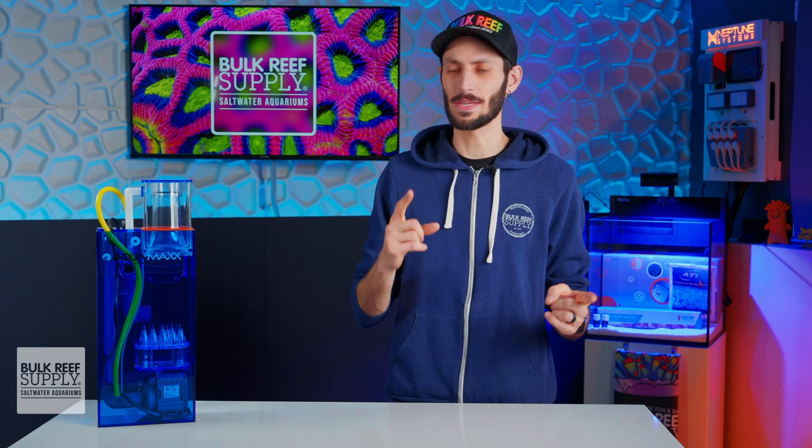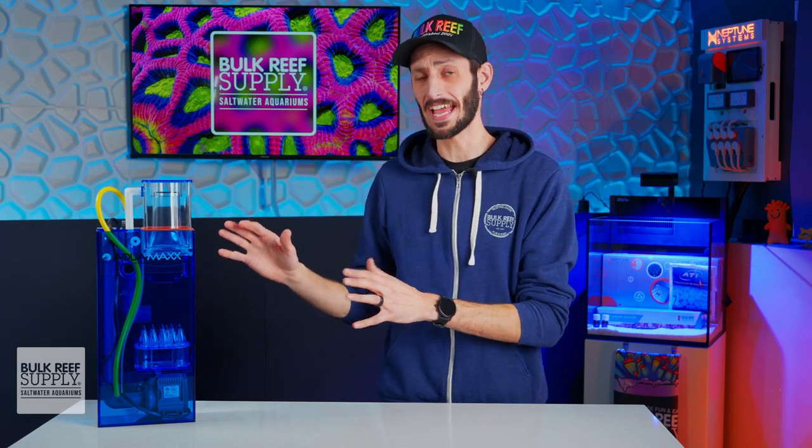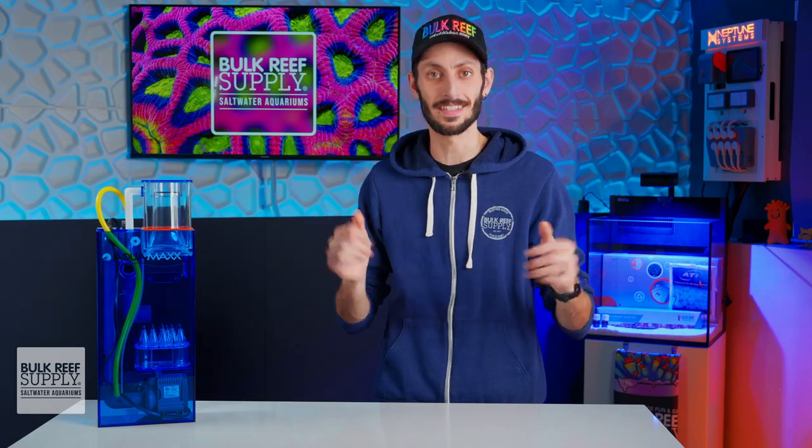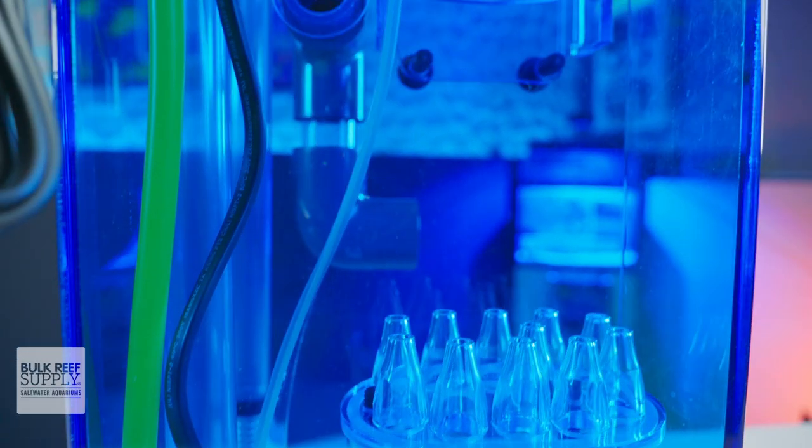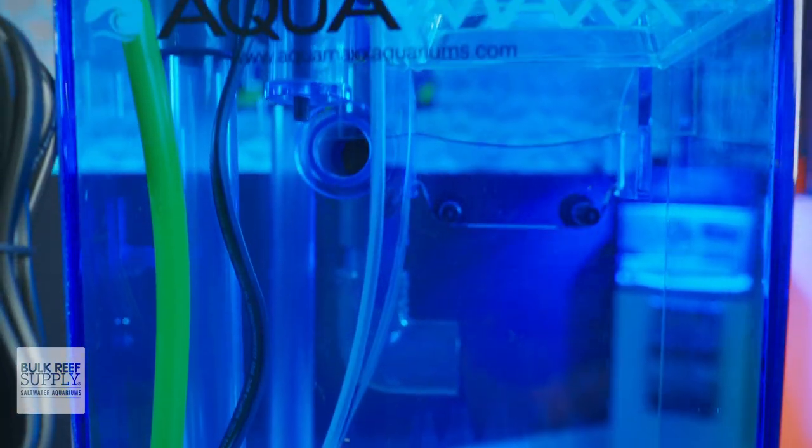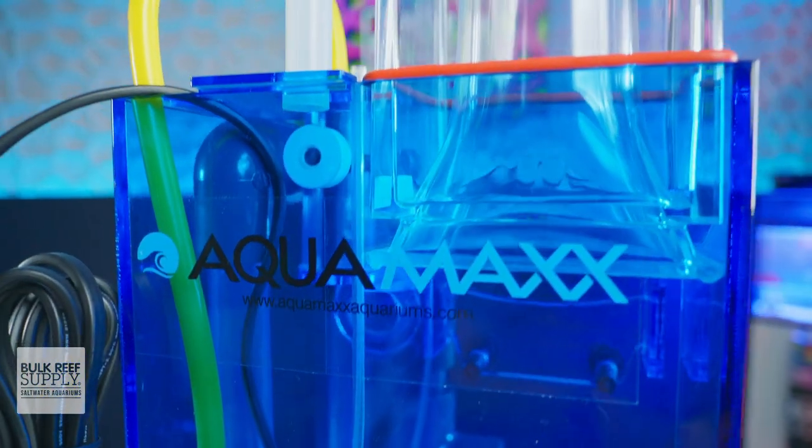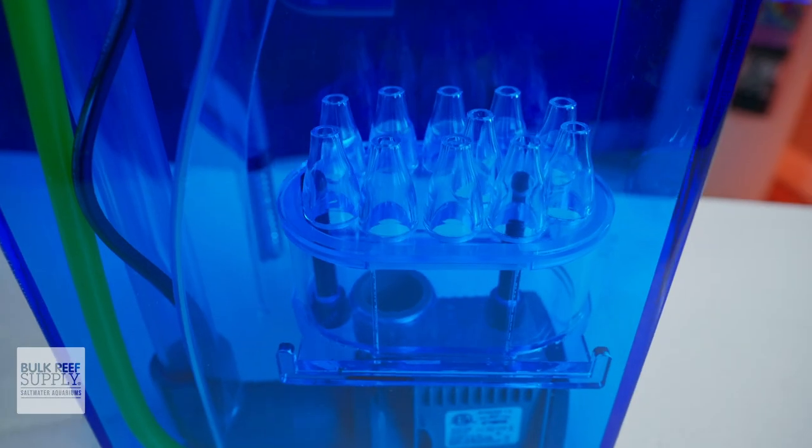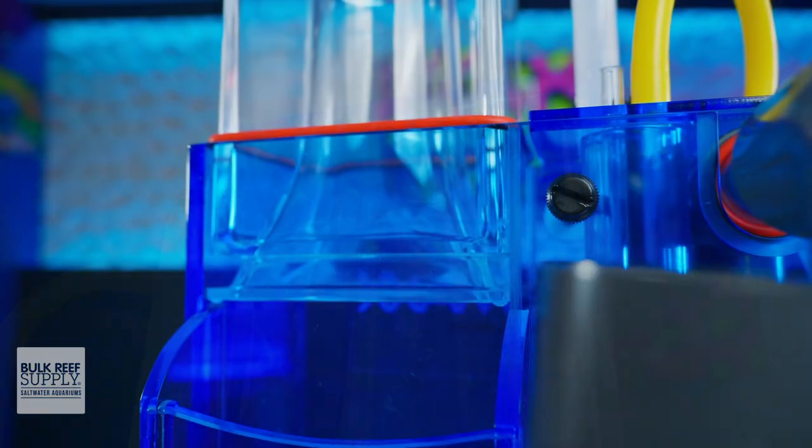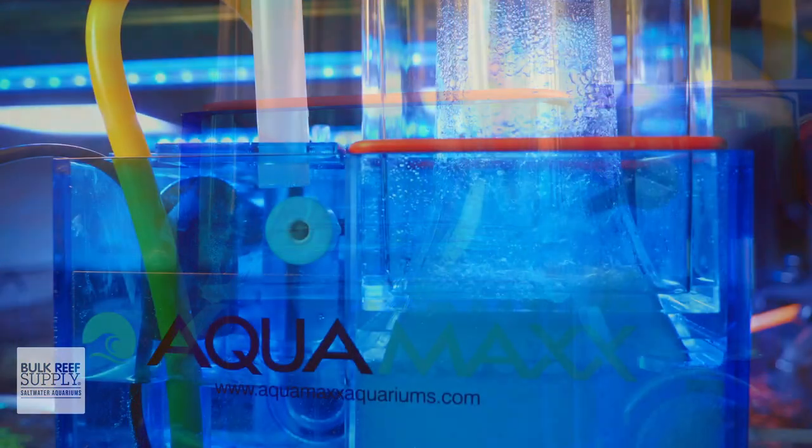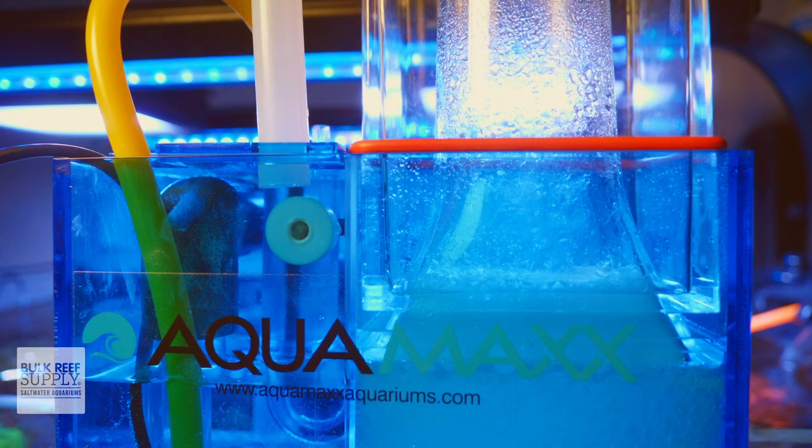Speaking of anatomy, the boxy exterior of this skimmer is actually hiding a number of curvaceous components, including the dividing plate, which creates a smooth transition for those bubbles to travel up the body, similar to the wine bottle shape we see in many in-sump skimmers. The diffuser plate's pretty novel and sports a collection of beer bottle shaped nozzles, and the collection cup itself has a tall inner neck that's also gently curved to help get those skimmate laden bubbles up into the cup before popping.